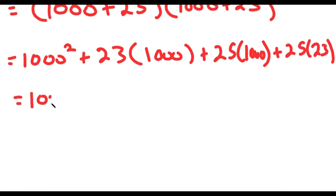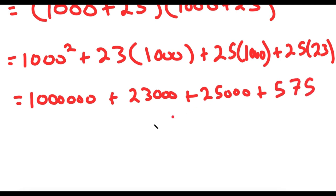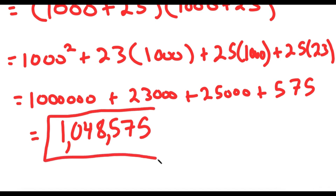Now, 1,000 squared is equal to 1,000,000. So I have 1,000,000 plus 23,000 plus 25,000 plus 25 times 23, which is 575. From here, 23,000 plus 25,000 is 48,000. And 48,000 plus 575 is 48,575. And that plus 1,000,000 is 1,048,575. So this is my answer to this problem.